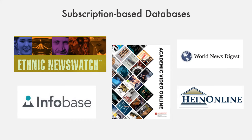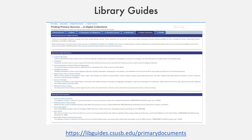A current list of repositories and databases available to you, including those that I just covered, is maintained on the Finding Primary Sources Library Guide under the In Digital Collections tab. This library guide can be accessed through the main page of the library website or at the web address listed on the slide.